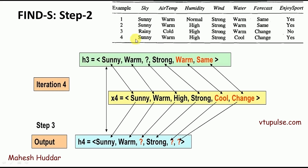The fourth example is positive, so we consider it. The hypothesis value Sunny matches Sunny in the example, so it is kept. Warm matches Warm, so it is kept. Question mark and High — the most general value is still question mark, so it stays. Strong matches Strong. Warm and Cool do not match, so we replace with question mark. Same and Change do not match, so we replace with question mark again. This gives us hypothesis 4.